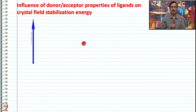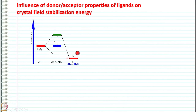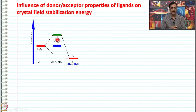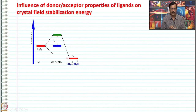Let us look at how the donor and acceptor properties of ligands influence the crystal field stabilization energy from these diagrams. When the metal interacts with a pure sigma donor ligand — where the ligand has relatively lower energy filled sigma orbitals — this gives a certain magnitude of CFSE, representing the metal interacting with filled low-energy sigma orbitals of the ligands. Examples of pure sigma donors are ammonia and water.